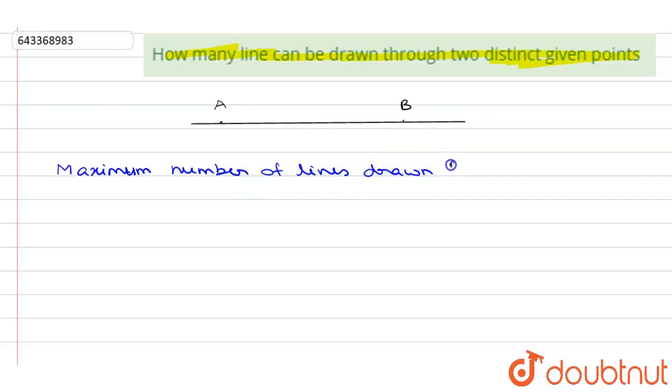One from two distinct points, from two distinct points is one and only one. So we can draw maximum one line from two distinct points.